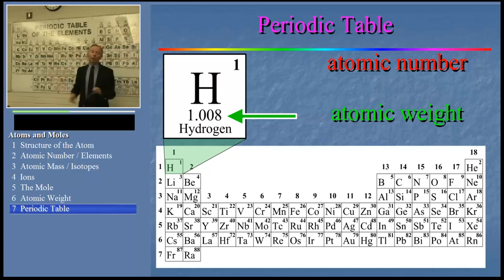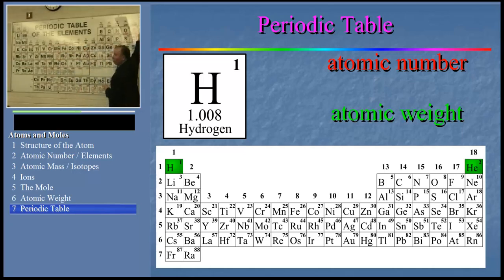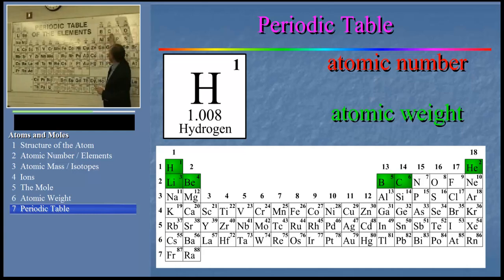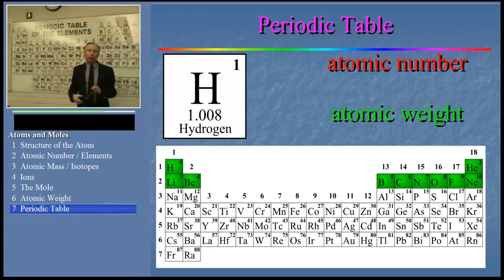Notice that the elements are listed in order of atomic number, beginning with hydrogen 1, going to helium 2, over here on this side, then to lithium 3, beryllium 4, boron 5, carbon 6, the one we've talked about, nitrogen 7, oxygen 8, fluorine 9, neon 10, and so on.